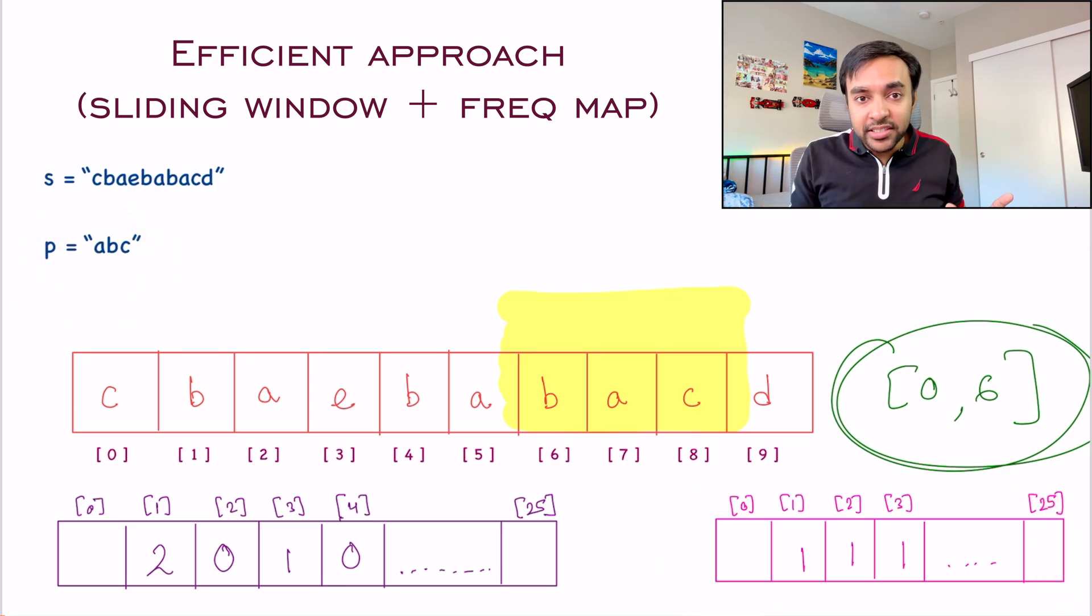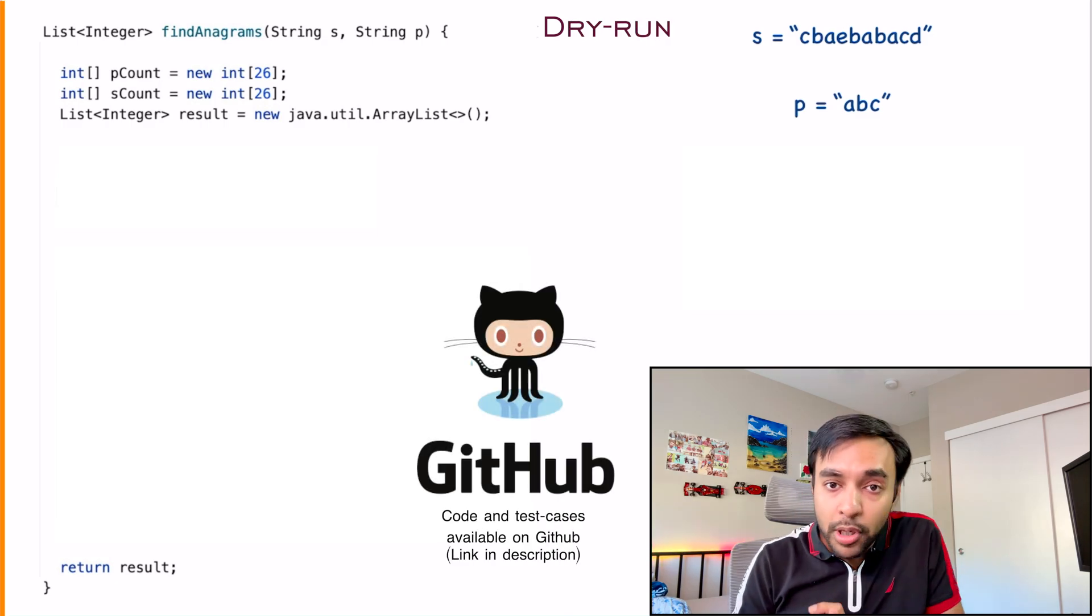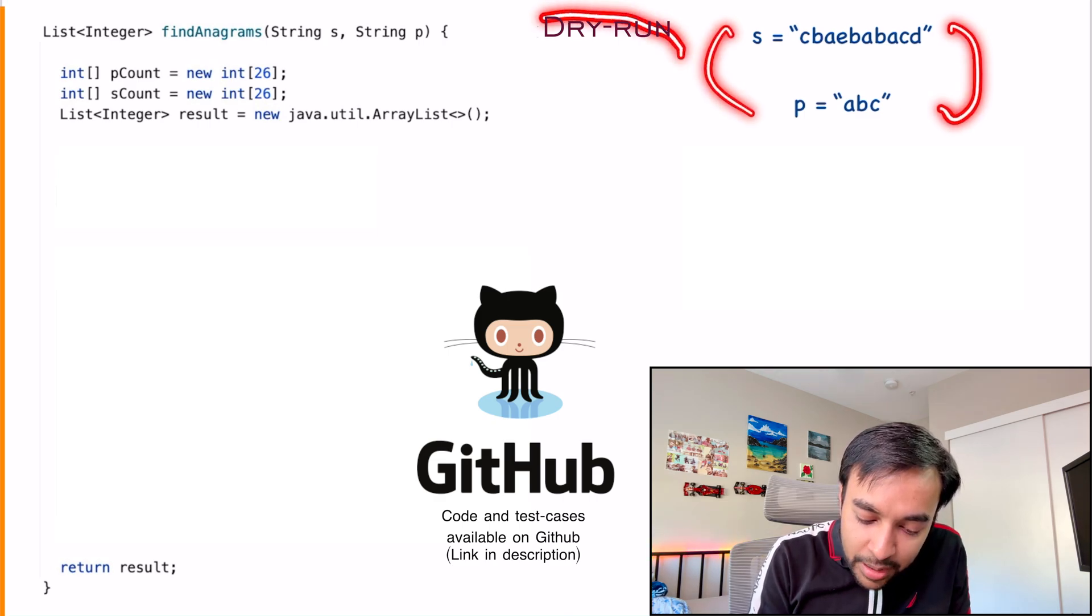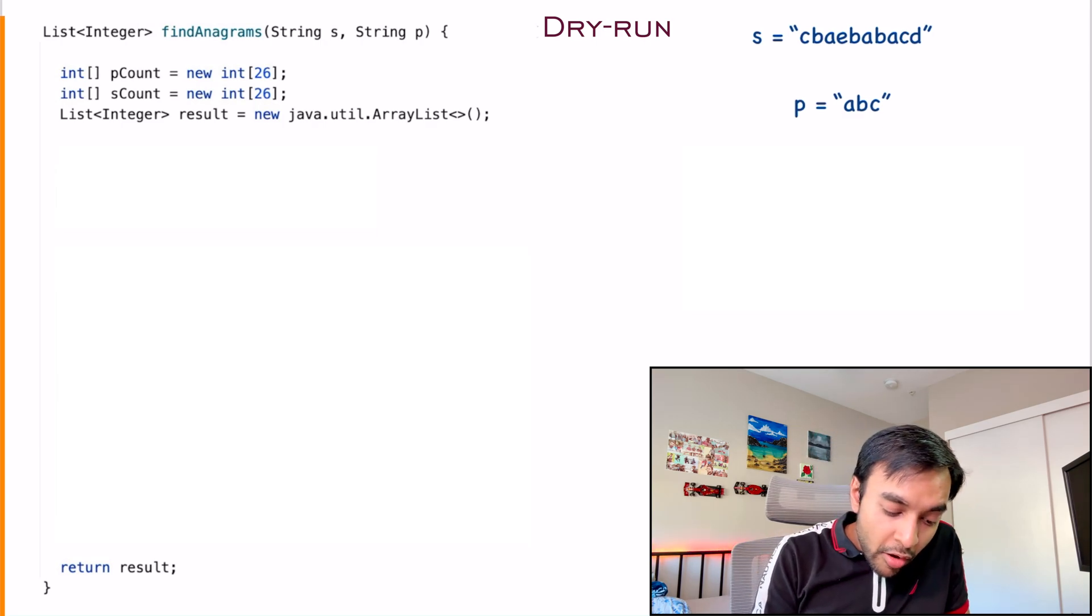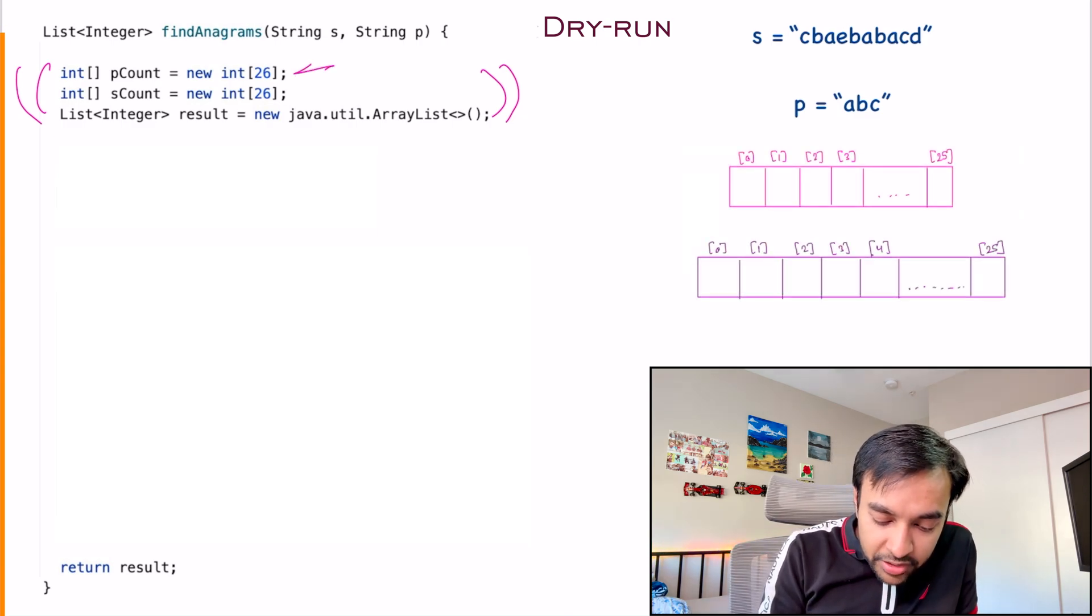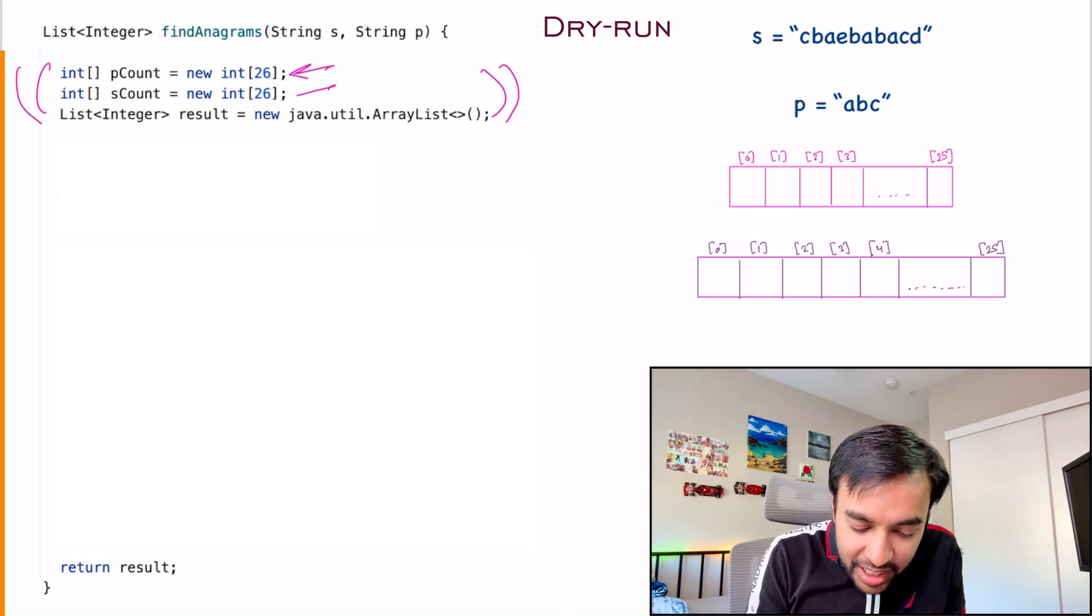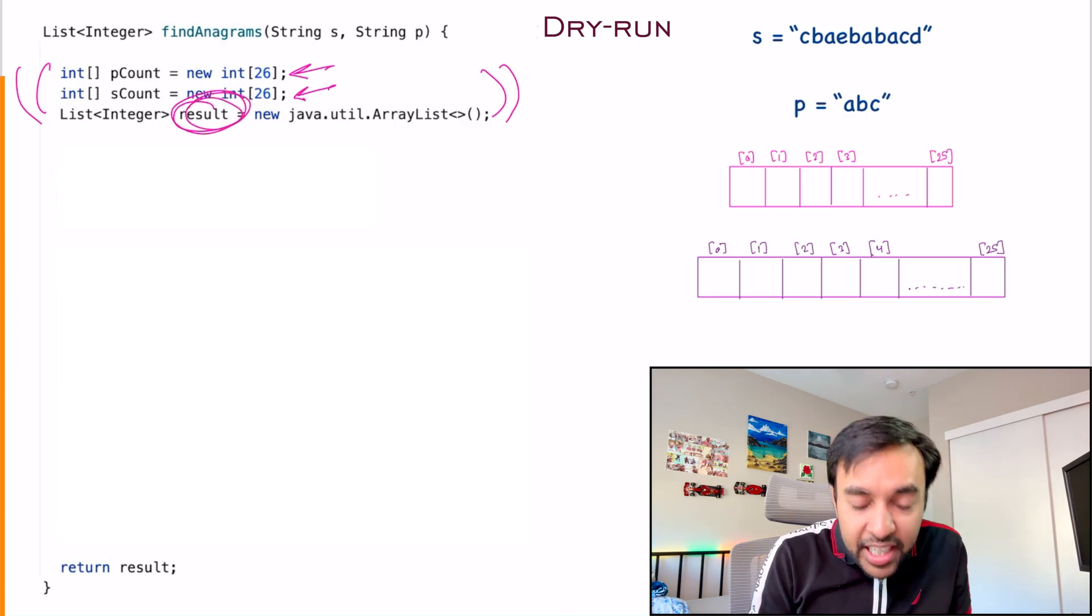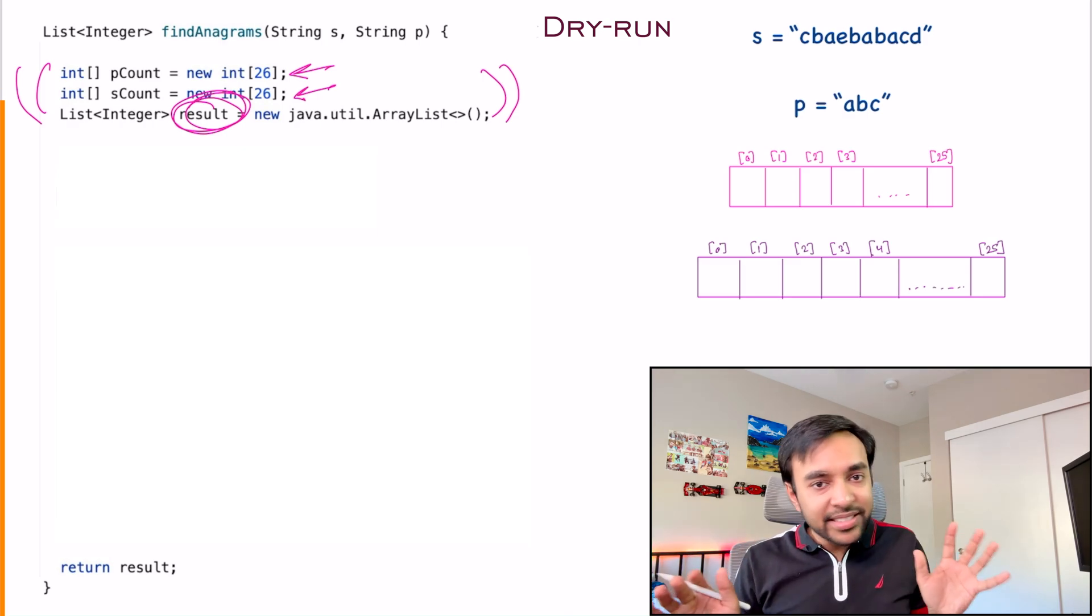Based upon all of this, let us quickly do a dry run of the code. Now on the left side of your screen, you will have the complete code to implement this solution. And on the right, I have my input strings S and P that are passed in as an input parameter to the function find anagrams. What is the first thing that we do? First of all, we create two frequency maps. The first map is going to store what is the count of each character in the string P. And the second map is going to store what is the count of each character in the string S. Also, we create a result list that will eventually return in the end.